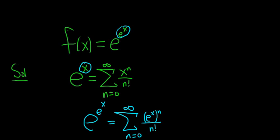And we're almost done. The last thing to do is just multiply the n and the x. So this is equal to the infinite sum as n runs from 0 to infinity of e to the n x over n factorial.